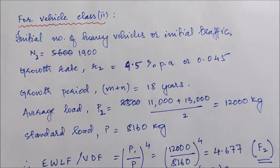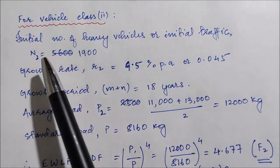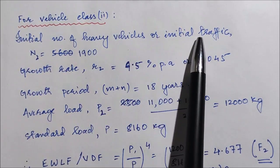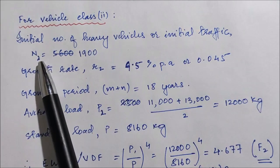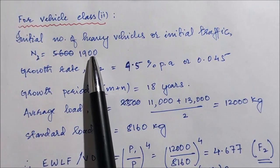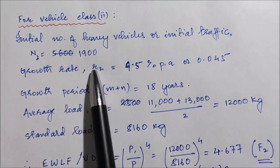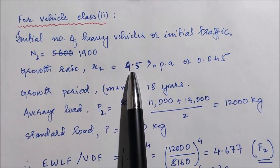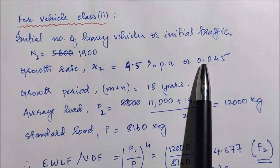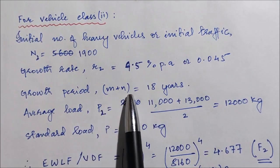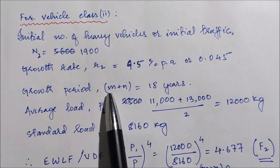For vehicle class 2, the initial number of heavy vehicles N2 is 1900, as given in the question. The growth rate R2 for vehicle class 2 is 4.5 percent per annum, or 0.045. The total growth period is the same — 18 years, that is 3 plus 15 years.